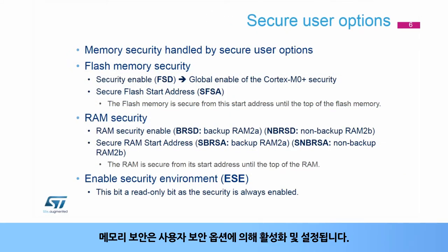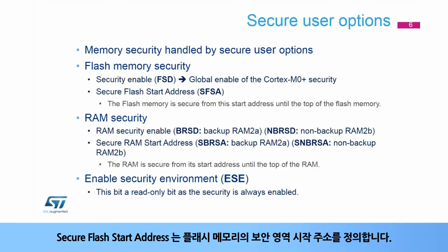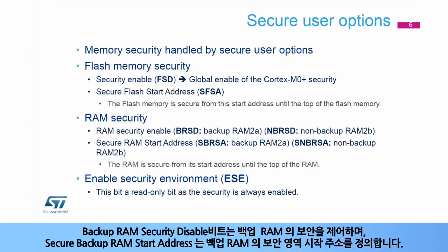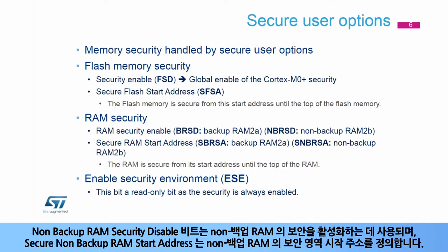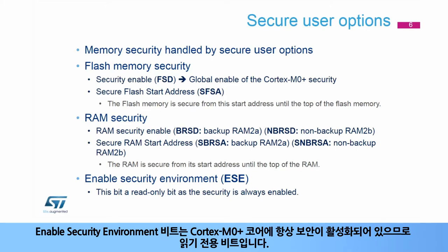Memory security is enabled and configured by secure user options. The flash security disable bit enables the global Cortex-M0 Plus security. The secure flash start address defines the start address from which the flash memory is secure. The backup RAM security disable bit controls the security on the backup RAM, and the secure backup RAM start address defines the start address from which the backup RAM is secure. The non-backup RAM security disable bit is used to enable security on the non-backup RAM, and the secure non-backup RAM start address defines the start address from which the non-backup RAM is secure. The debug access to the secure areas is controlled by the Debug Disable Security bit. The Enable Security Environment bit is a read-only bit, as the security is always enabled on the Cortex-M0 Plus core.